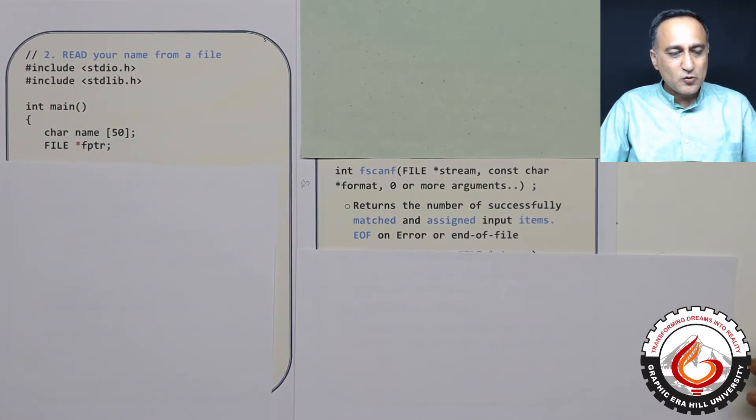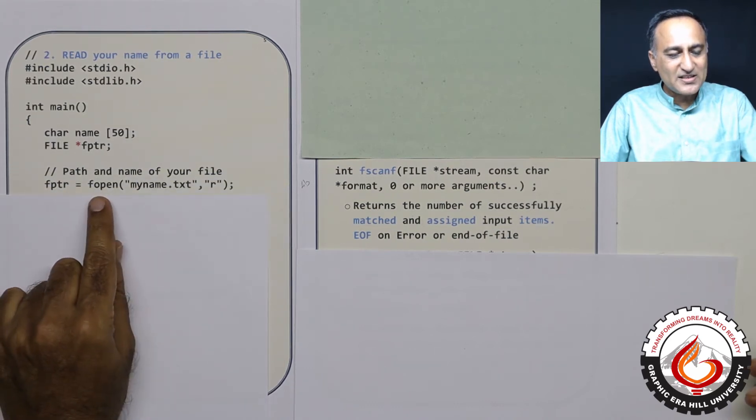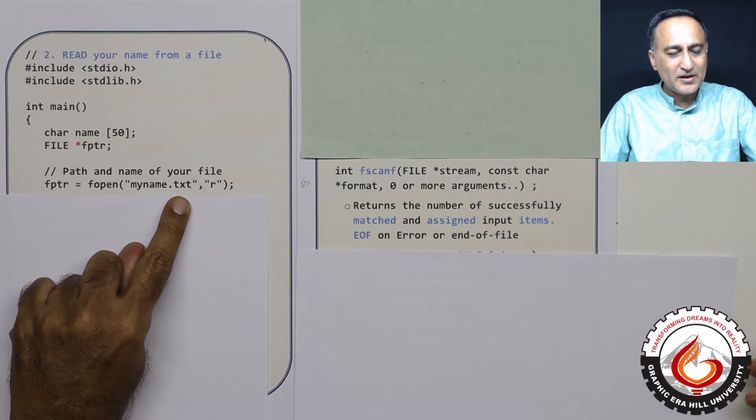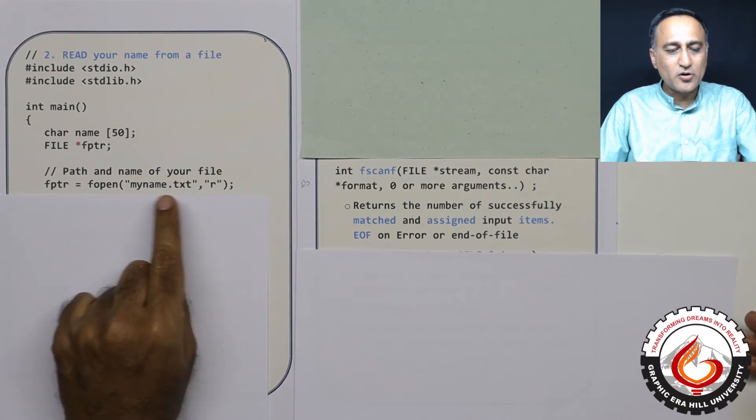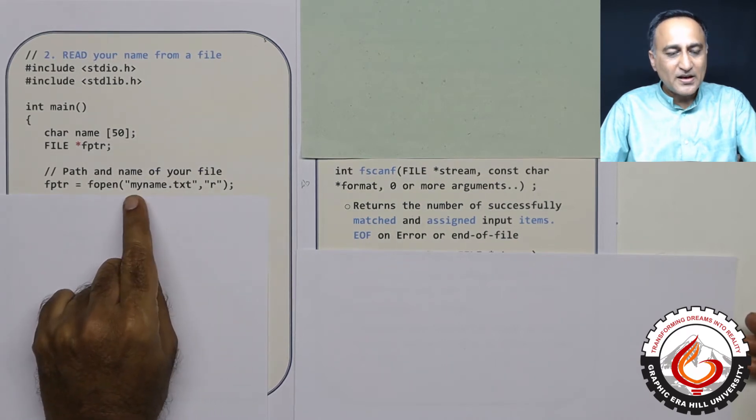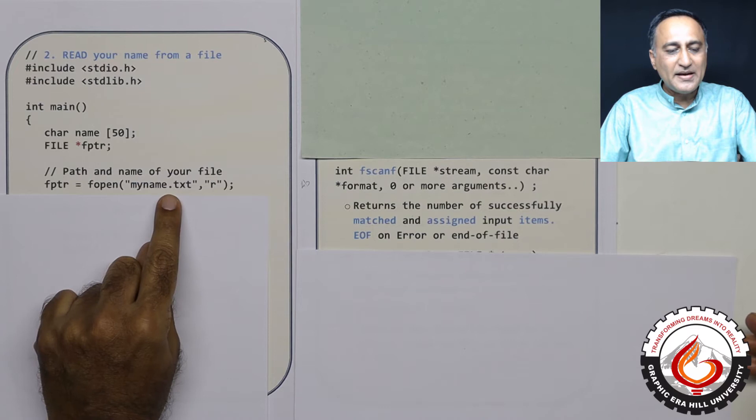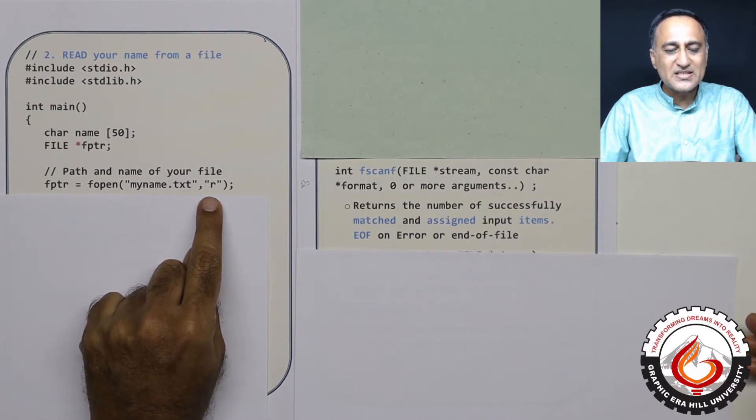Then I am using the same name to open the file. I am saying fptr is equal to fopen myname.txt, because in the previous program I had shown you opening this file in write mode, and I wrote my name. Now I want to read my name. Since read mode is R, I am putting R in double quotes.